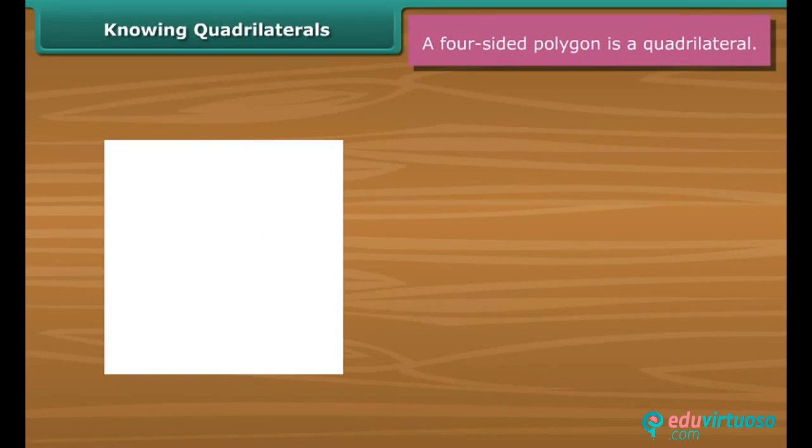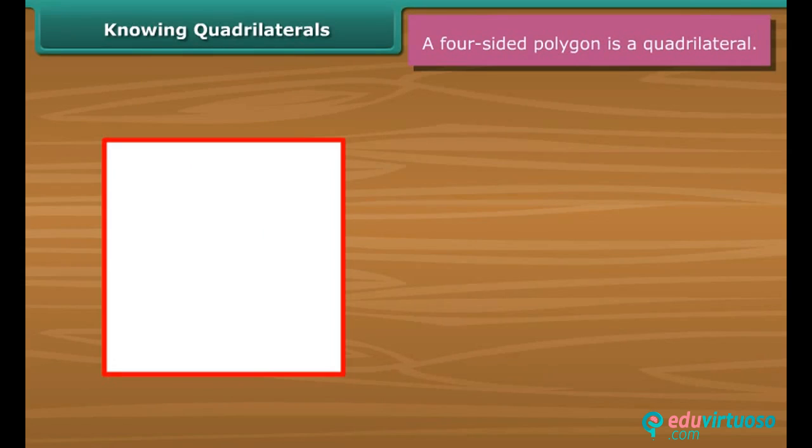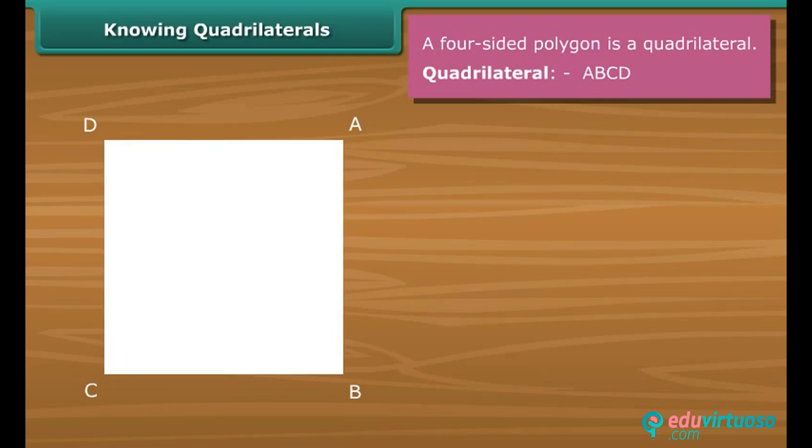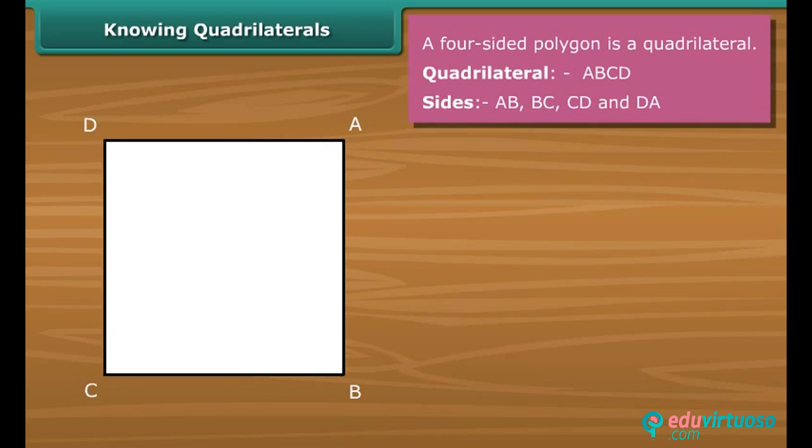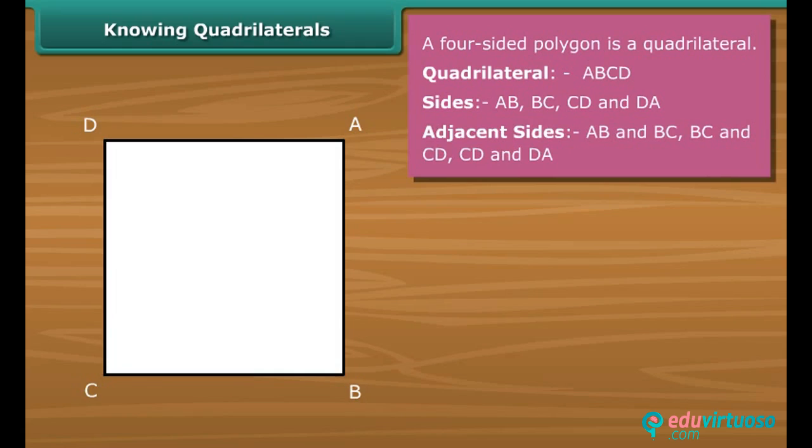The page of a book is called a quadrilateral. It has four sides, four vertices and four angles. In quadrilateral ABCD, four sides are AB, BC, CD and DA. Side AB and BC, BC and CD, CD and DA are adjacent sides.